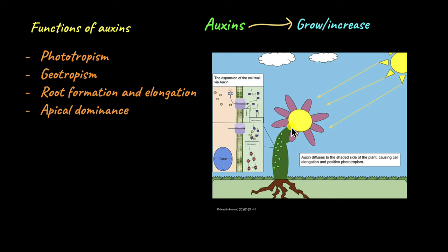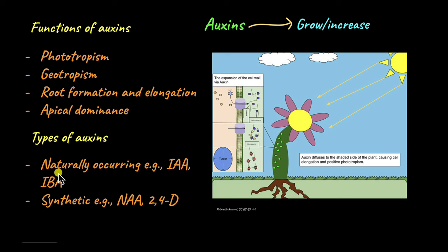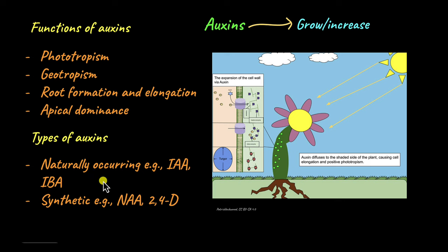This is also seen in tea plantations, which is why they keep pruning the top of the plants all the time. Now there are two types of auxins. Naturally occurring auxins include indole-3-acetic acid — which was incidentally the first auxin to be discovered — and indole-butyric acid. Synthetic auxins include naphthalene acetic acid and 2,4-D, which is 2,4-dichlorophenoxyacetic acid.